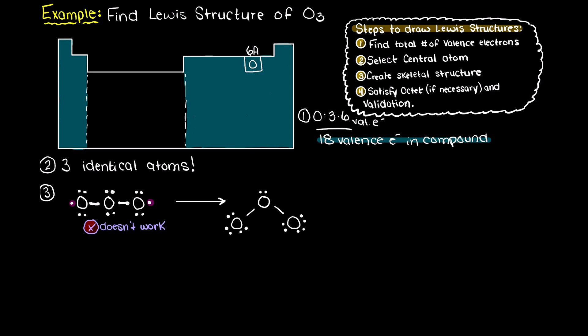Then, let's see where we land in the validation stages, in which we check if our total number of valence electrons matches step 1, and that all atoms that are needed are satisfied in terms of the octet rule.